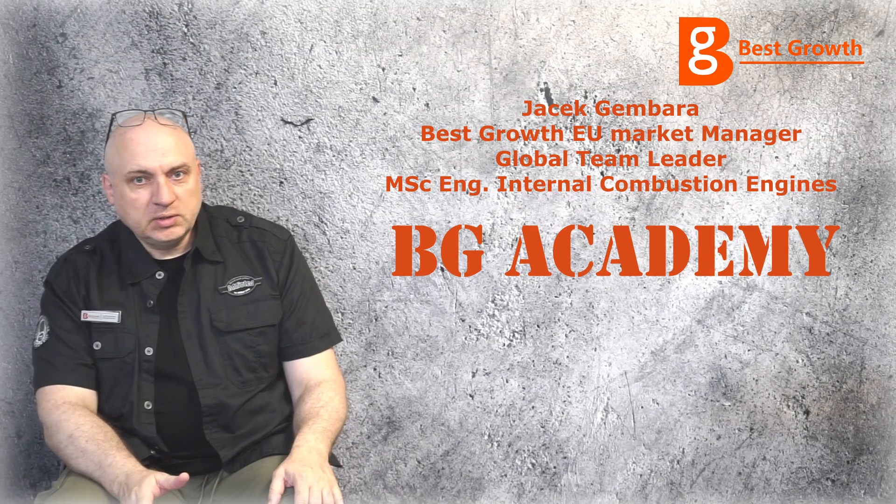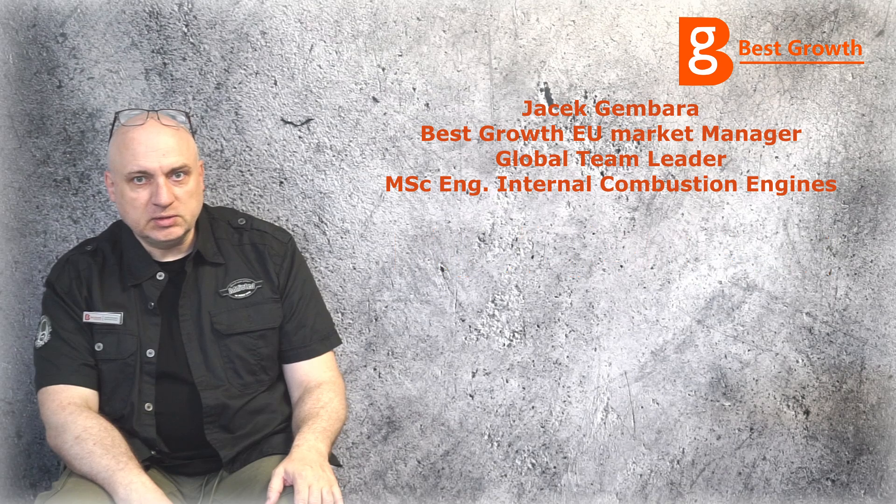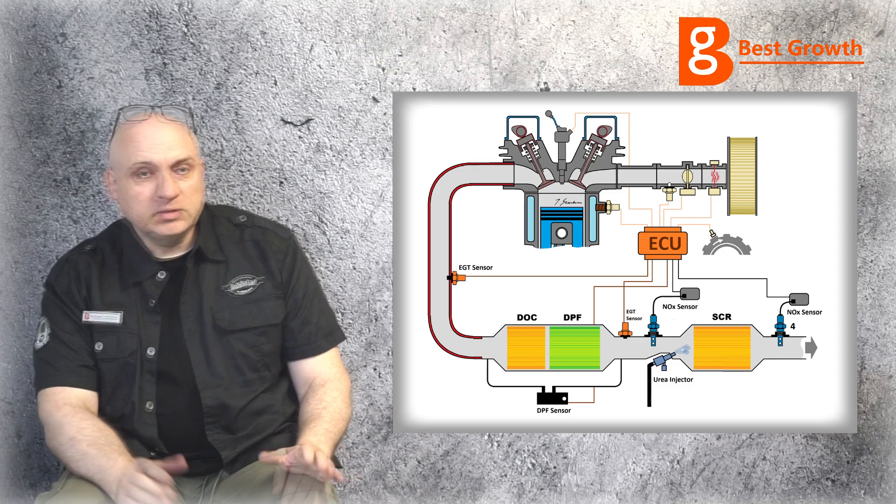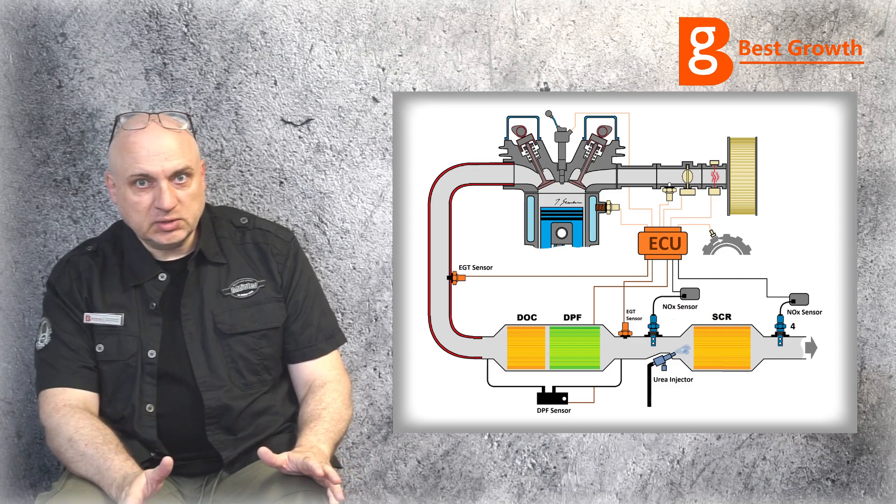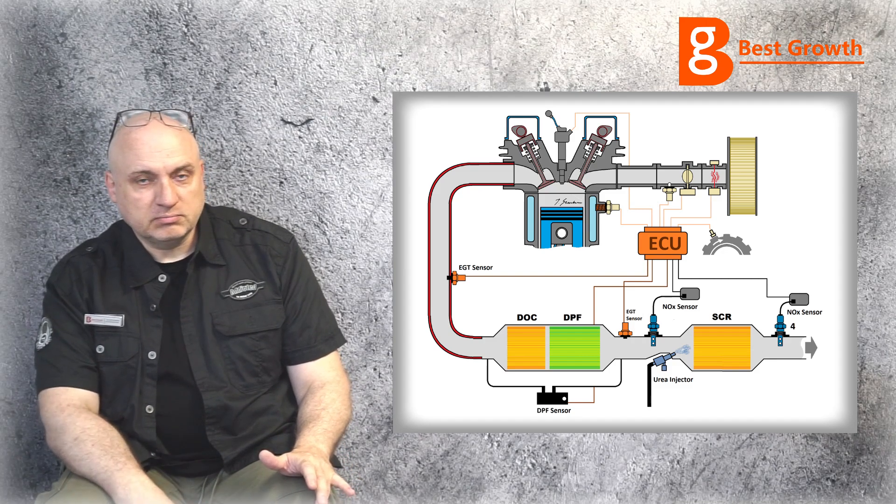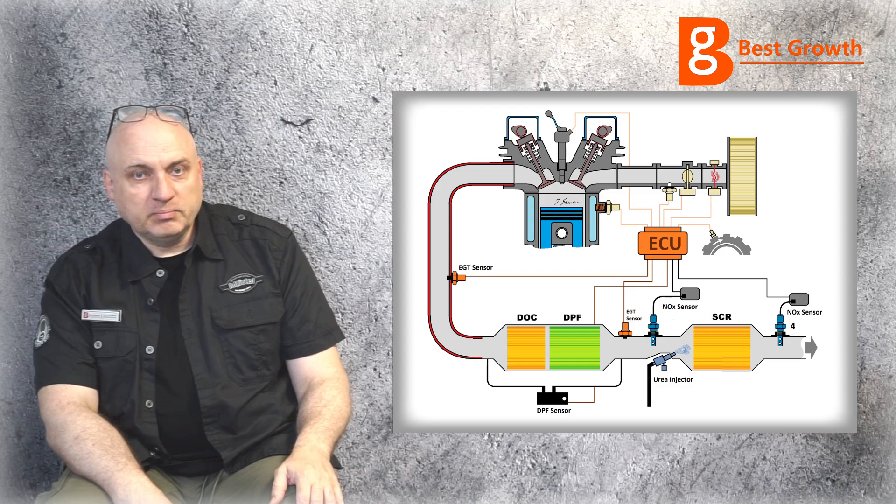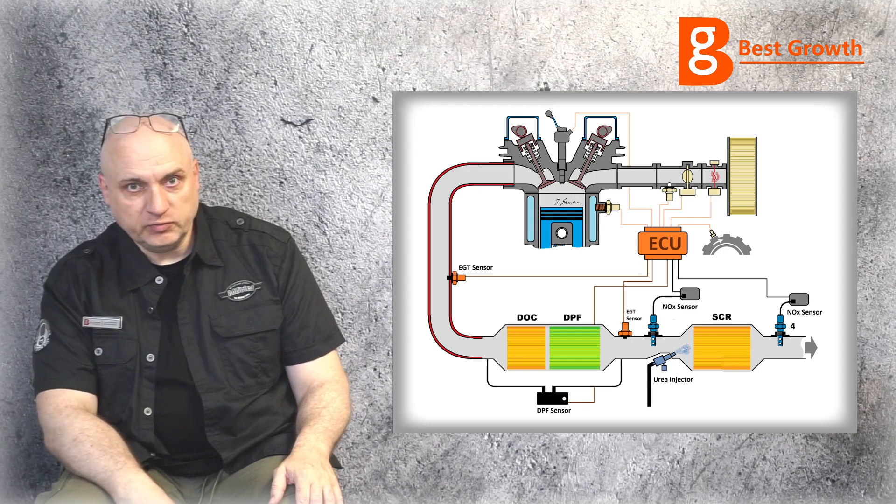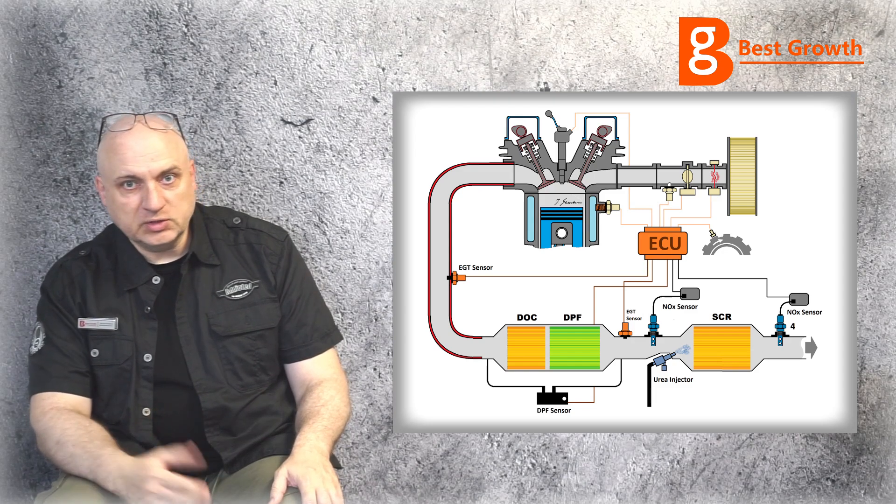A modern diesel engine exhaust system is very complex. It consists of several units, sensors and injectors. It even has its own electronic control unit very often. This is a very interesting subject that we will take separately. But for today, just to have a better overview, please have a look at this diagram.